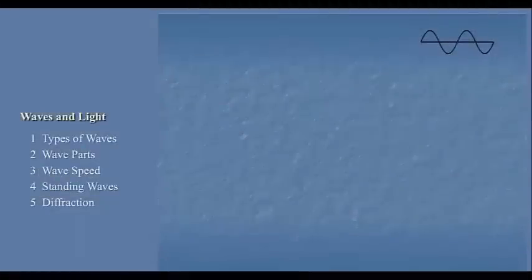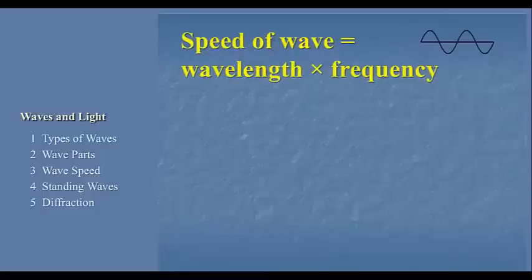There is an interesting relationship between the frequency and wavelength of a wave. Specifically, the speed of the wave is equal to the wavelength times the frequency. And if you consider the units of frequency and wavelength, you can see that this makes perfect sense.